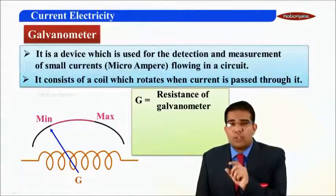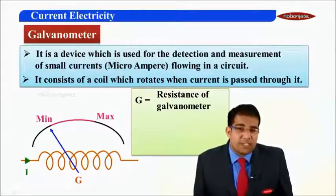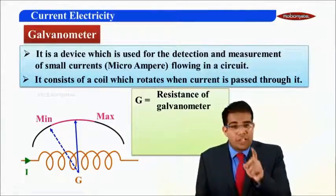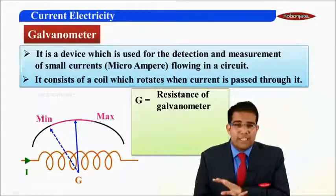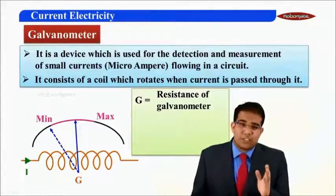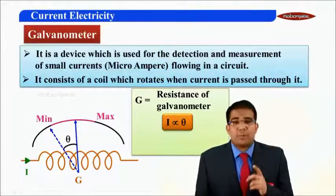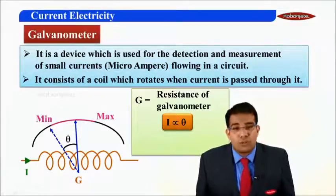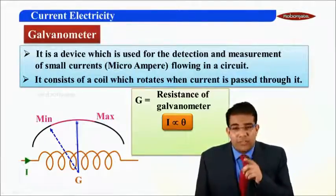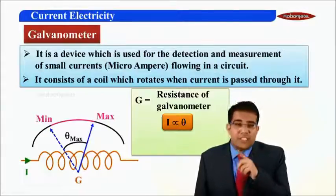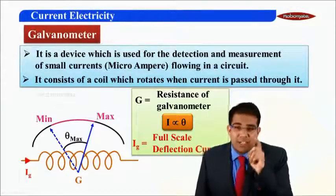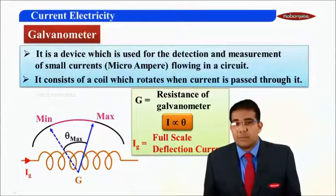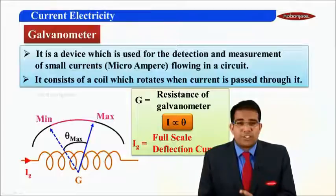A needle is attached to this coil, pointing towards a printed scale with values from minimum to maximum. When I pass current into the coil, the needle rotates — the mechanism of rotation will be covered in the chapter on magnetic fields. The angle rotated by the needle is directly proportional to the current passing through. The current at which the deflection is maximum is called the full scale deflection current, represented by the variable Ig.